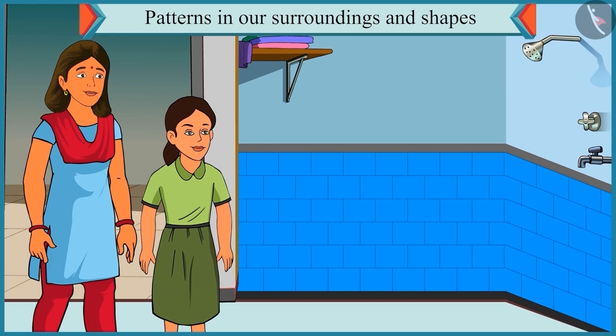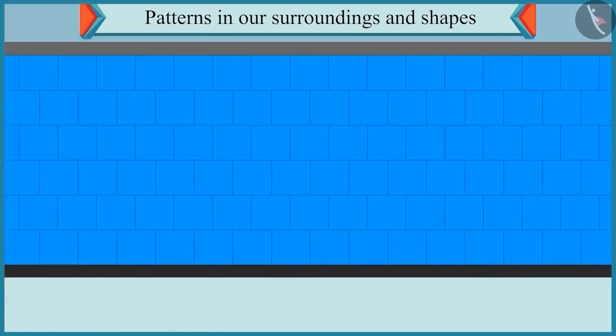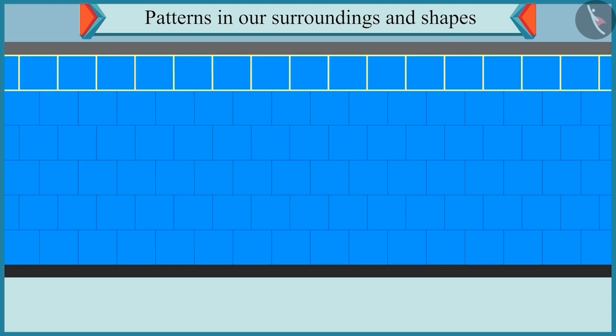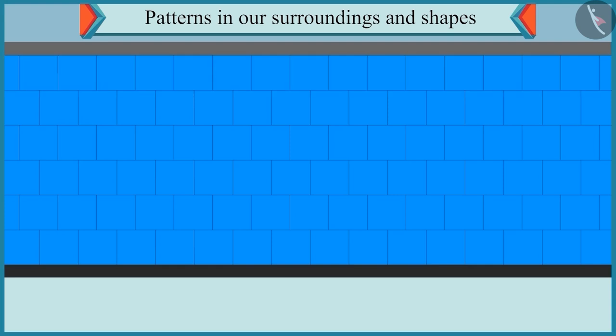Chutki, the tiles are stuck properly. Look, a pattern is made in the tiles by sticking them in this manner. Oh, yes. Here in the first row, the tiles are laid in a uniform manner.